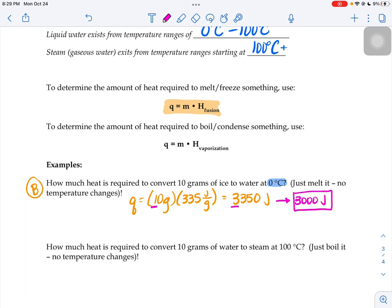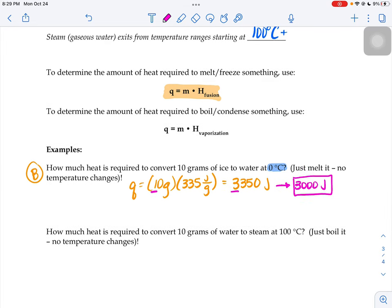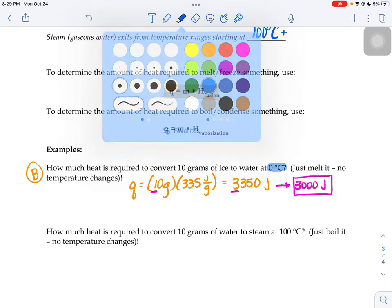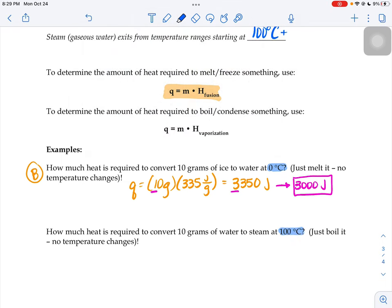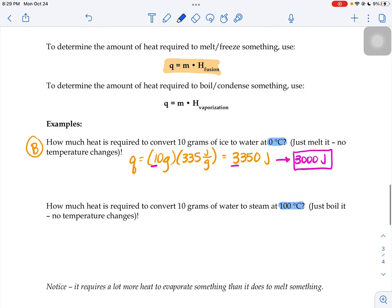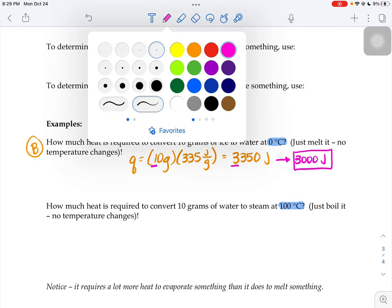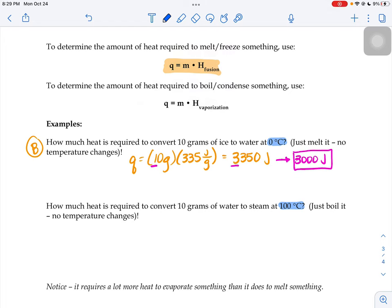What if we wanted to take 10 grams of liquid water and turn it into steam at 100 degrees? So this time, no temperature changes. It's staying 100 degrees the whole time. Just get it from 100 degree liquid to 100 degree gas. So we're at part D on that graph. We're going to use the mass times heat of vaporization this time.